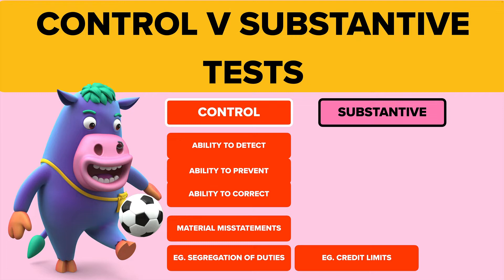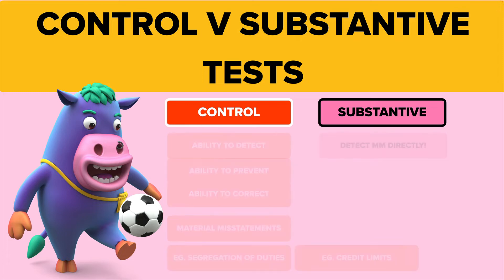You might need a new provision for bad debts, or an increased one, because you've increased the credit limits beyond what you should have done. So, controls are there to stop these material misstatements. Substantive tests don't look at the controls — they look at the figures in the accounts directly and try to detect the misstatements directly, whether in individual transactions on the income statement, balances on the balance sheet, or the disclosures.